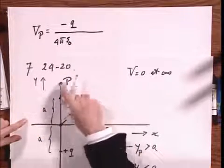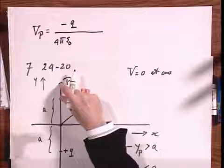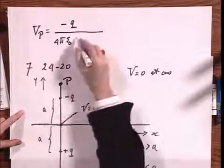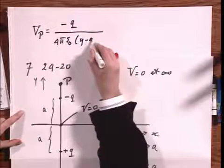And now I have to take the distance between these two points, which we have called r earlier, and that is y, if y is the position of P, minus a. So y minus a.